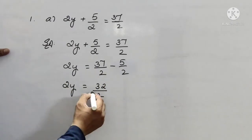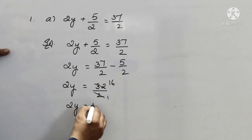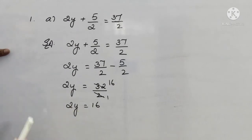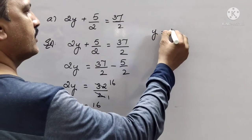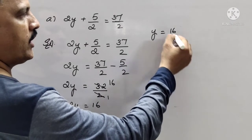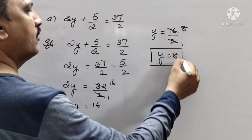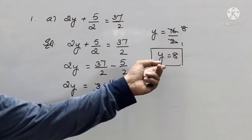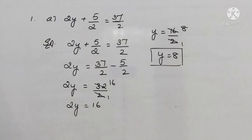32 will go in the 2 table — 2 sixteens — so 2y equals to 16. Now, 2 into y: the 2 will go to that side as a divisor. That is y equals to 16 by 2. 2 eights. So, y equals to 8. This is the value of y. I think you all understood.